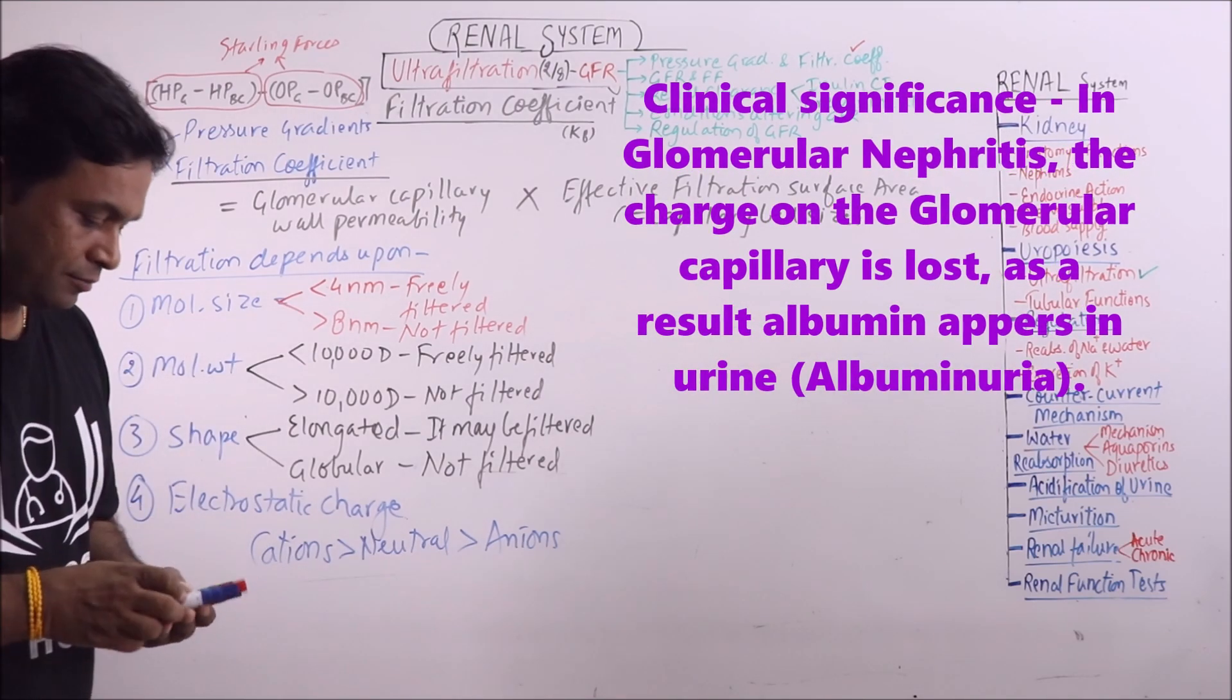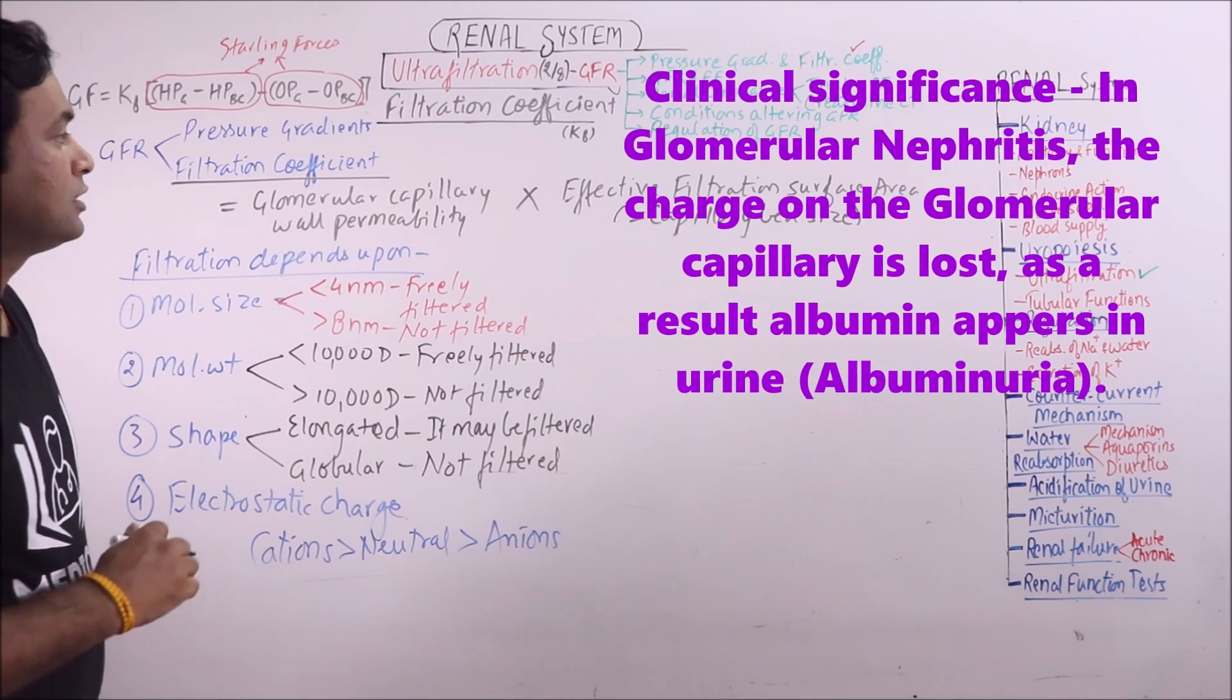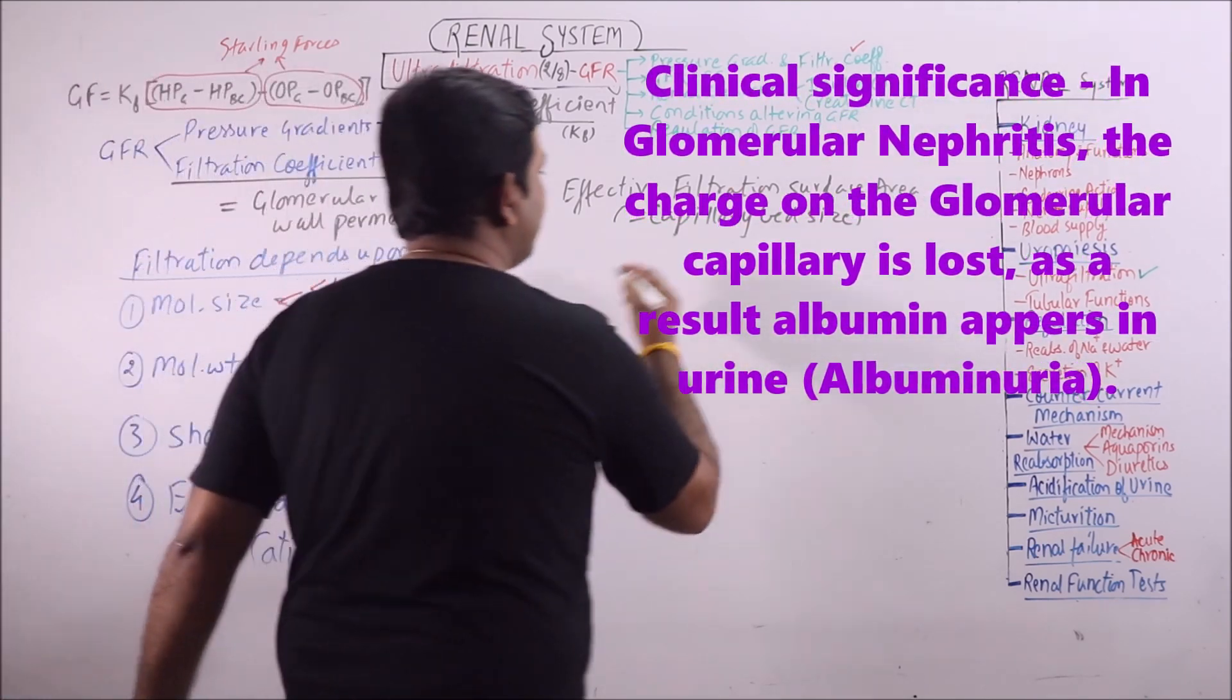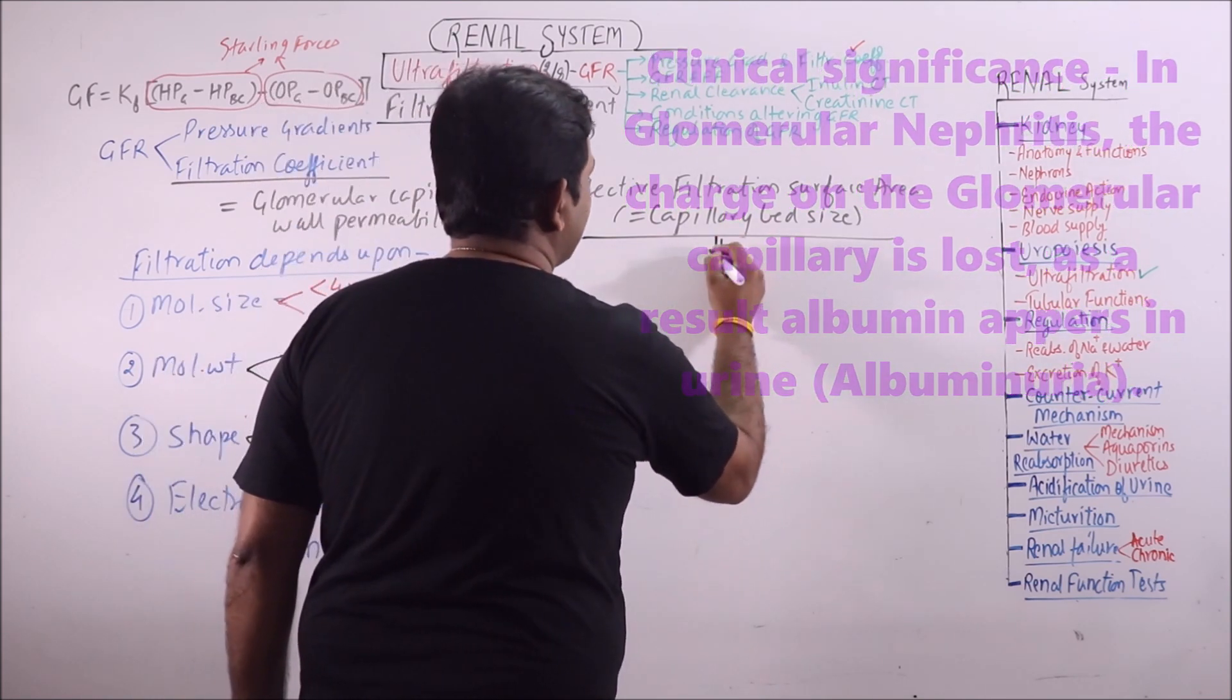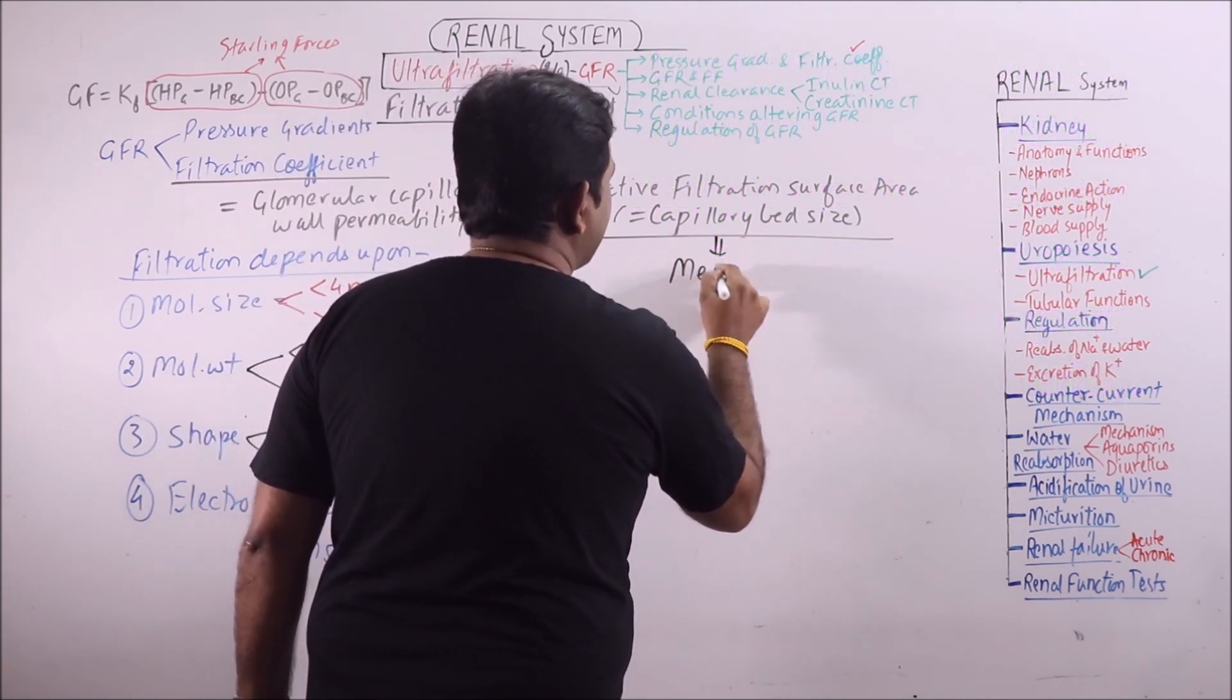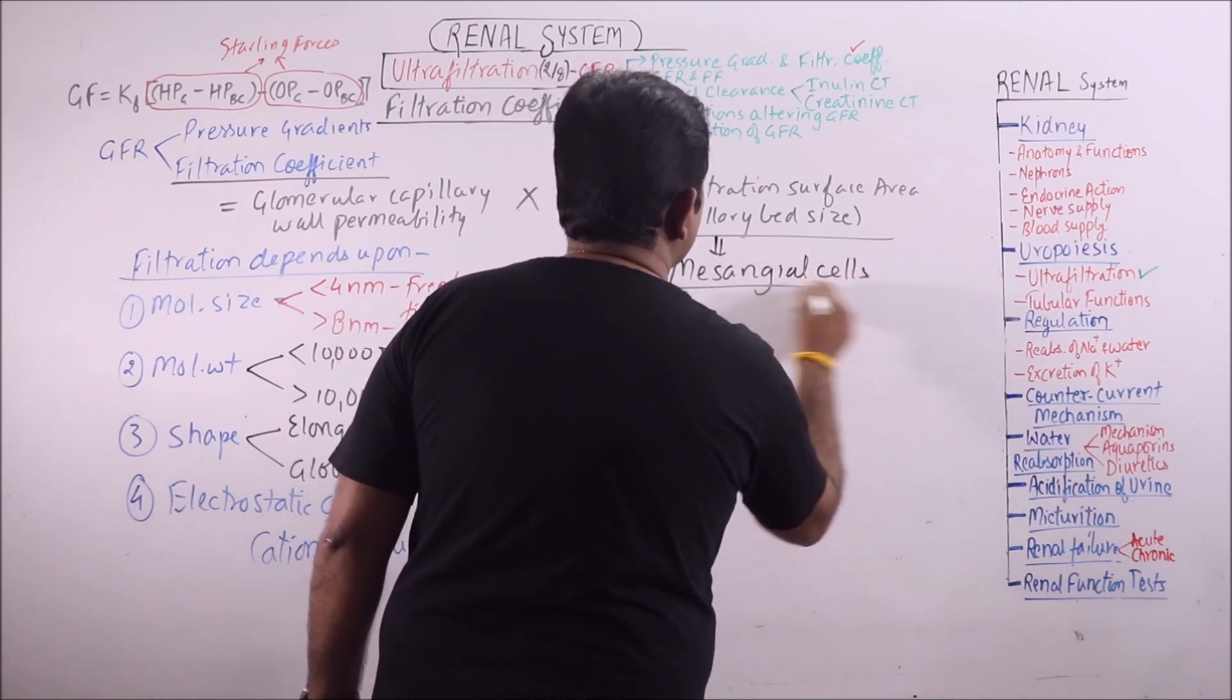This is the reason why albumin, which is a negatively charged protein, doesn't enter the glomerular filtrate. Now the capillary bed size or the effective filtration surface area,